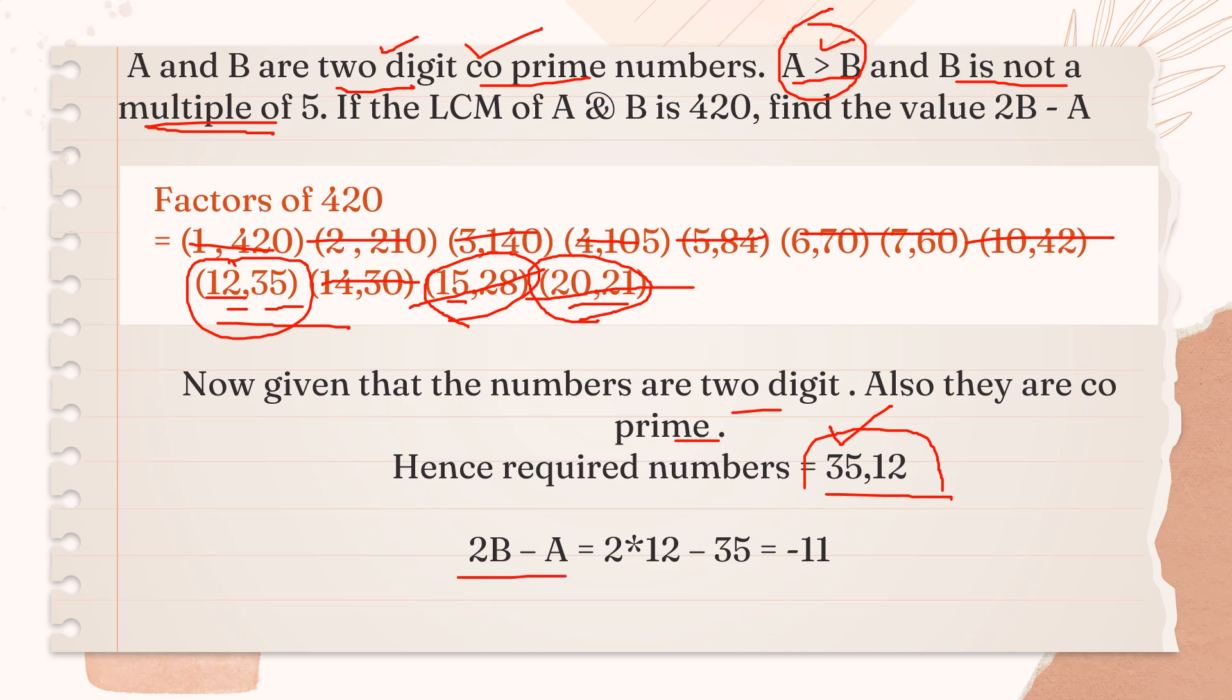If you have written it as 35 comma 12 only, then you will substitute B for 12 and A for 35. Put in the values, 2 multiplied by 12 minus 35. Answer is minus 11.